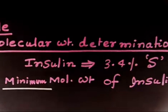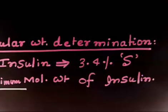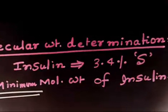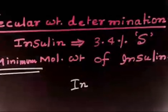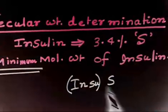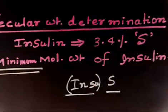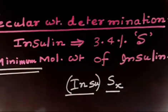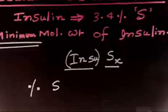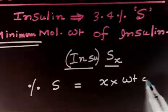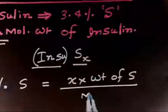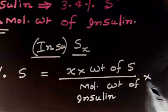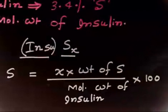The molecular weight we seek is the minimum. If insulin contains 3.4% sulfur, we can write the molecular formula of insulin as 'Insu·Sx', where 'Insu' represents all other atoms (carbon, hydrogen, oxygen, etc.) condensed, and x is the number of sulfur atoms. The percentage of sulfur is given by: x × (atomic weight of sulfur) divided by the molecular weight of insulin, multiplied by 100.